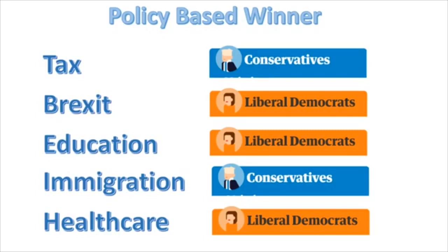In summary, from a policy perspective: on tax, Conservatives are the clear winner, with Liberal Democrats a close second at only 1% increase. On Brexit, education, and healthcare, Liberal Democrats are way ahead of their counterparts with more realistic promises. On immigration, Conservative policies are probably more viable and would benefit the economy overall. So overall, Liberal Democrats are the policy winners, though Conservatives are likely to win more seats. Voting Lib Dem and creating a coalition scenario like 2010 would actually make a lot of sense in this election.